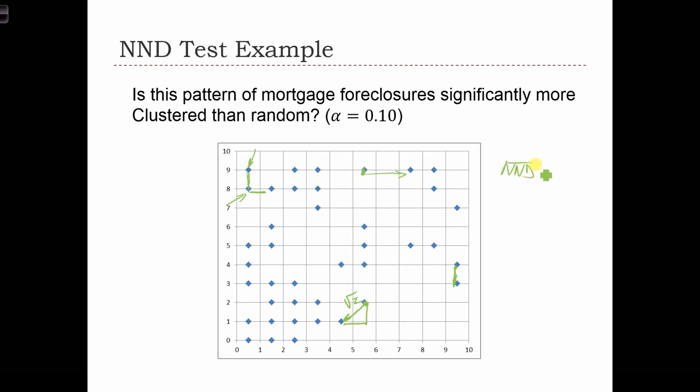So remember, NND bar equals the sum of NNDi over N. So we're just taking the average NNDi.